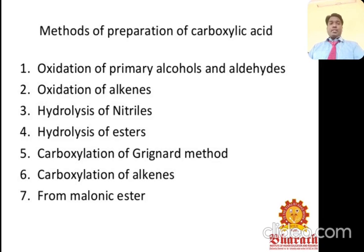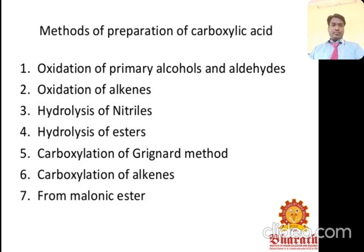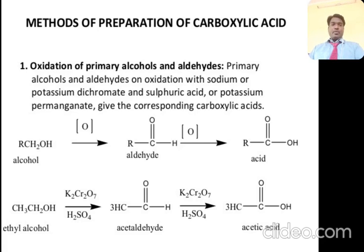Methods of preparation of carboxylic acid: oxidation of primary alcohols and aldehydes, oxidation of alkenes, hydrolysis of nitriles, hydrolysis of esters, Grignard reagent method, and carboxylation of alkenes. In the first method, primary alcohols and aldehydes are oxidized with sodium or potassium dichromate and sulfuric acid, or potassium permanganate, to give the corresponding carboxylic acid.